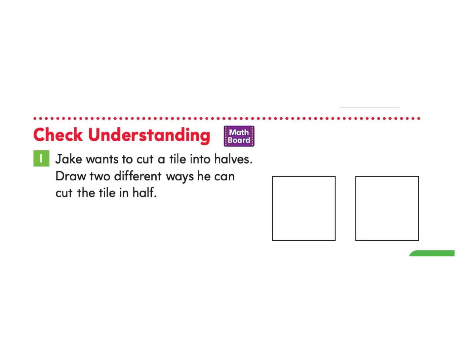Great work! It's time to check our understanding. Jake wants to cut a tile into halves — draw two different ways he can cut the tile in half. One way he could cut the tile in half would be right to the middle, and another way would be from one end all the way over to the other end. That would be a different way to cut the tile in half. Great job today. You can go back and re-watch this video and pause any time as needed. Outstanding job!